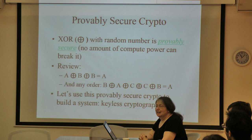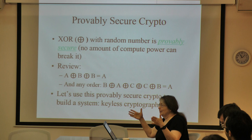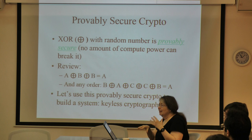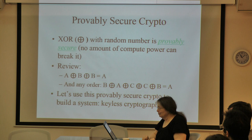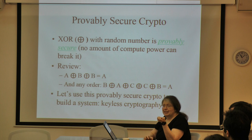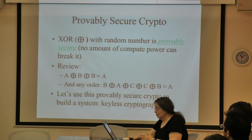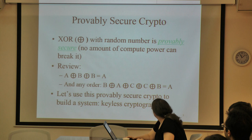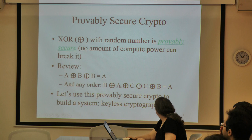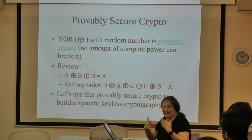I'll give a nice simple example of a system you can build out of provably secure cryptography. The one cryptographic algorithm that's provably secure is: take your message and XOR it with a random number as big as the message—no amount of compute power can distinguish any message from any other. To review what XOR is: if you XOR something with the same thing twice, they cancel each other out. So let's use this to build an insecure system.